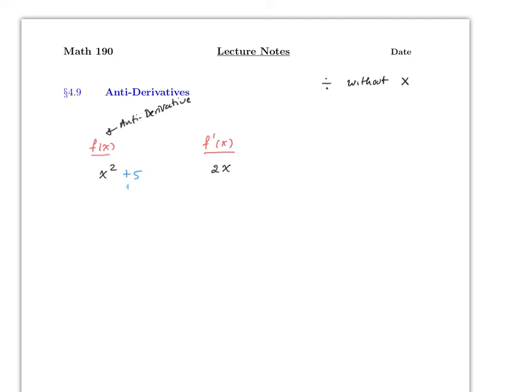Notice that whether the function was x² or x² + 5, the derivative is still just 2x. So the plus 5 — or plus/minus any constant — is very important. If the derivative is 2x, was the original function x², or x² + 5, or something else? For that reason, the anti-derivative of 2x is x² plus a constant C.